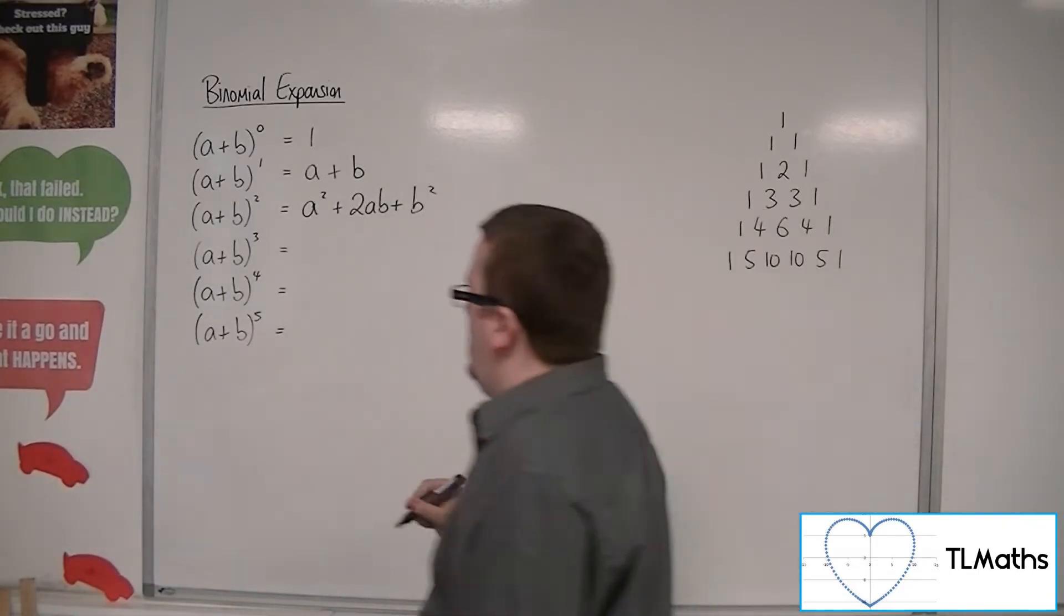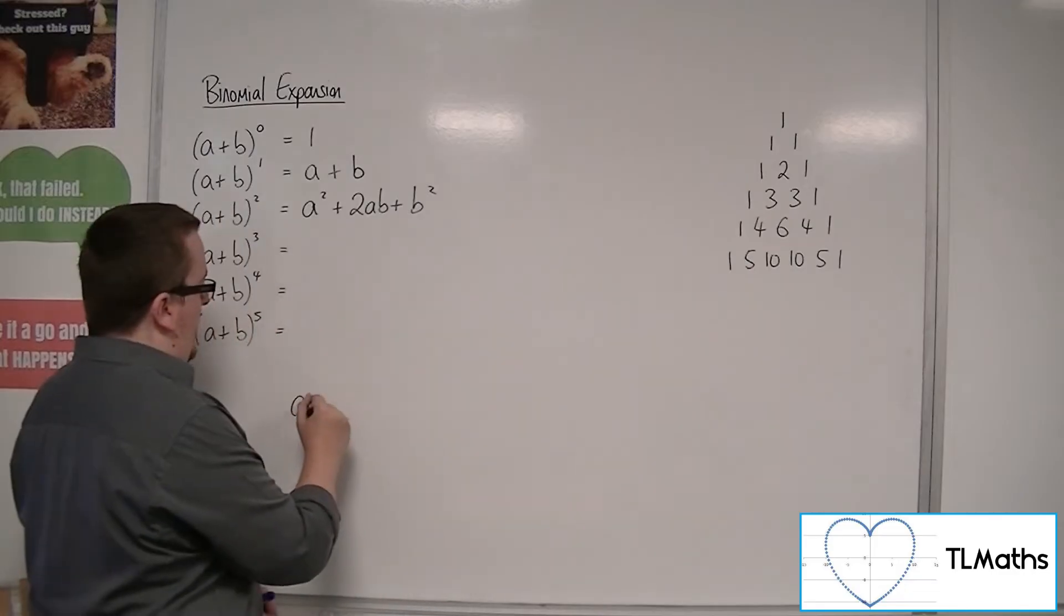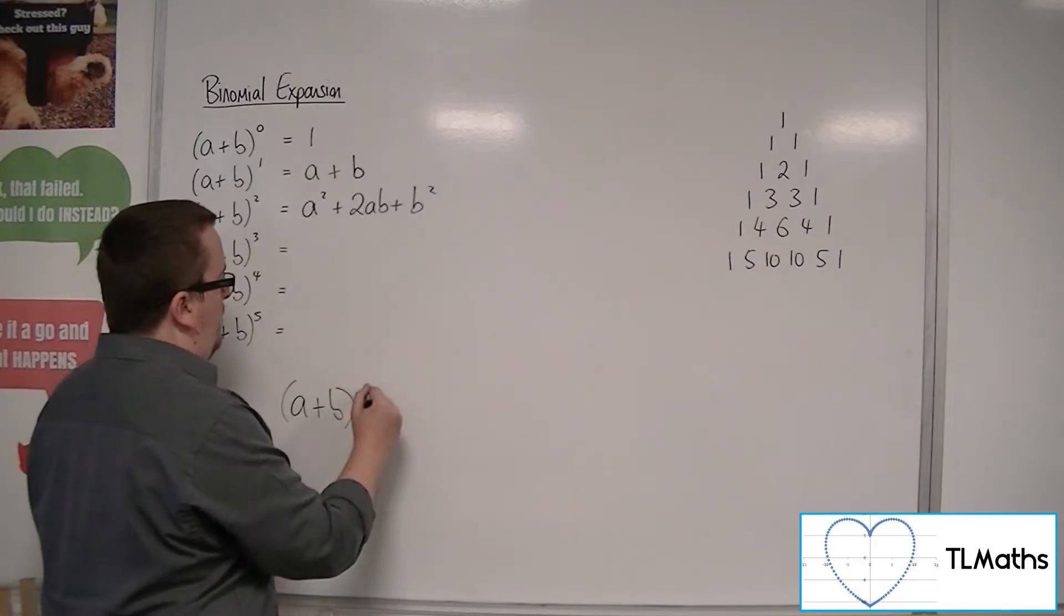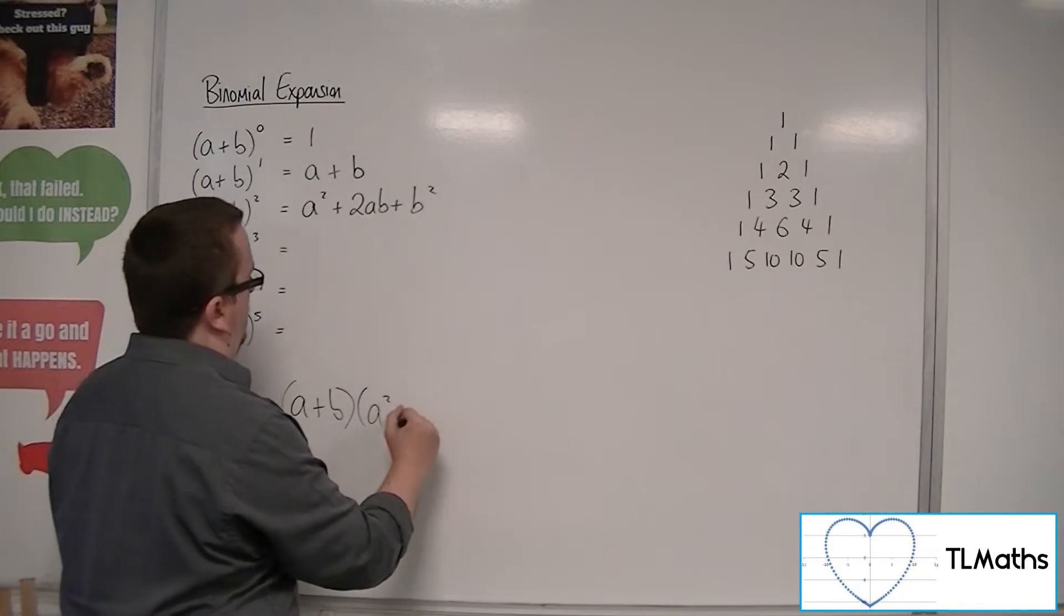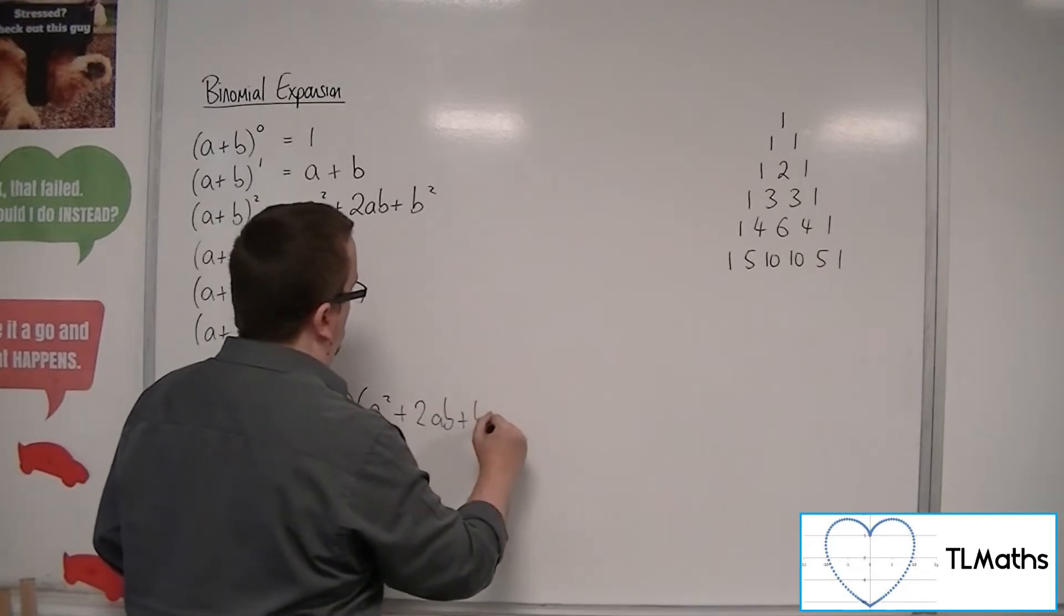Now as for a plus b cubed, that's going to be a plus b times a plus b squared. So a squared plus 2ab plus b squared.